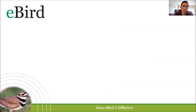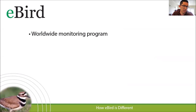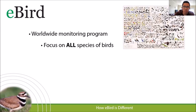Now let's talk about how eBird differs from those other projects. First, eBird is a worldwide monitoring program — you can collect and submit data from every single country in the world. The American Kestrel Project and others are not worldwide; they're limited to specific regions or the United States. eBird also focuses on all species of birds — there are over 10,000 species worldwide, and almost all have been recorded in eBird. About 99% of all birds can be entered into eBird's database.